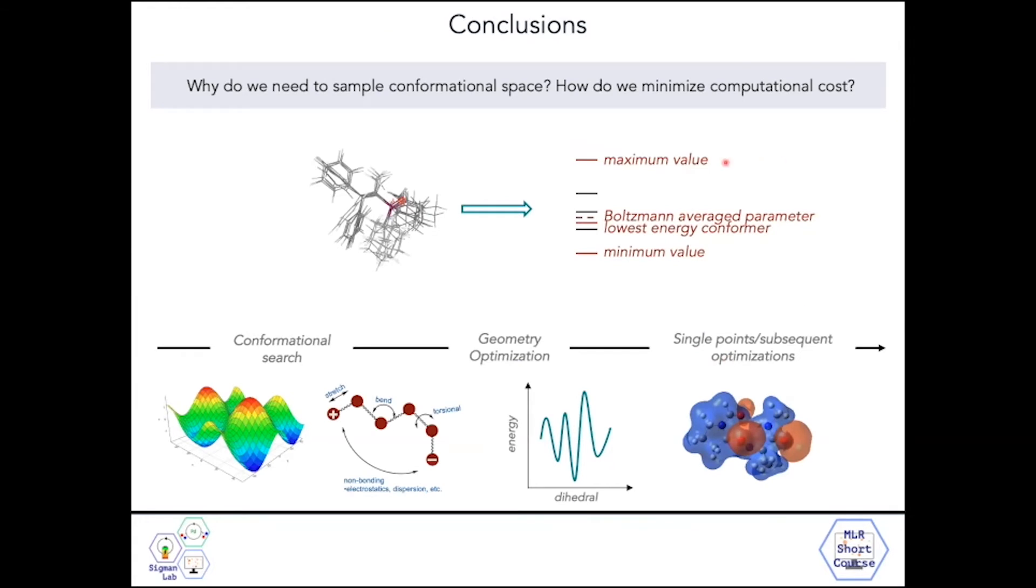Going back to this key question that we've been trying to answer through the course of this module, why do we need to sample conformational space, and how do we minimize computational cost? One key goal of sampling conformational space is allowing us to replicate the dynamics of the system. We're able to take parameters from the minimum value, the Boltzmann-averaged parameters, as well as any maximum values.